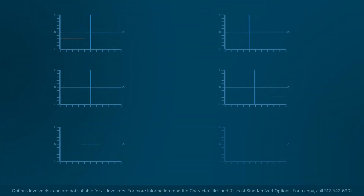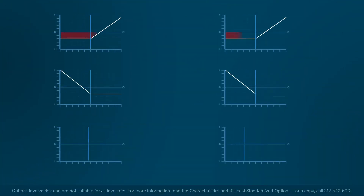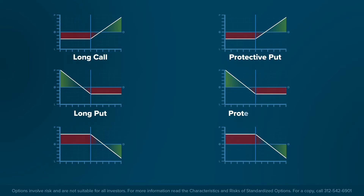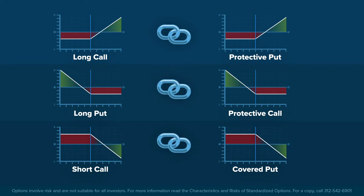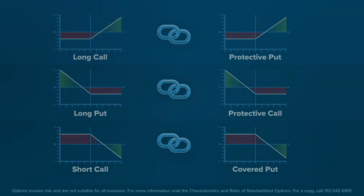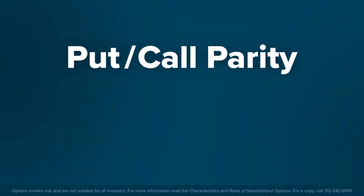As you go through the examples that follow, you may notice that certain strategies use different mixes of products, yet have similar risk-reward structures. This is because the prices of puts and calls are inextricably linked to each other and the price of the underlying stock through an equation known as put-call parity.